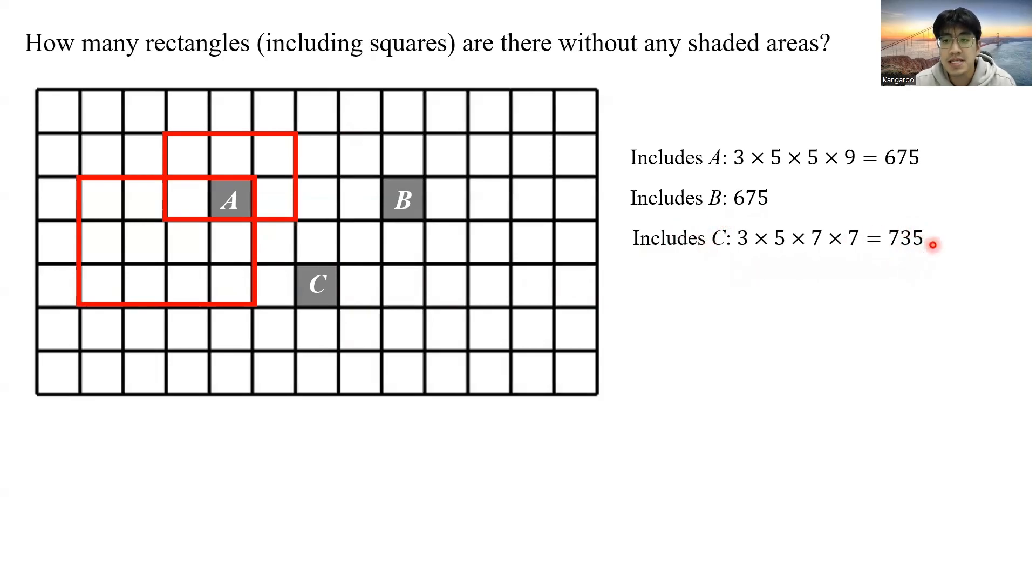So we simply sum up these three numbers to get how many rectangles containing the shaded area? That's not right. Because if we sum up these three areas, we would have double counted some of the rectangles that contain both AB or both BC.